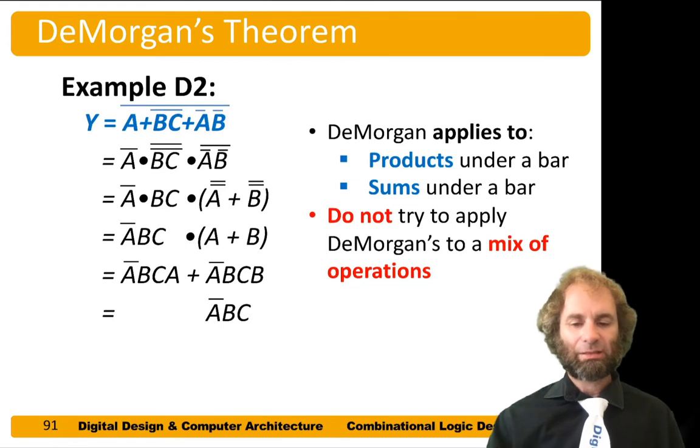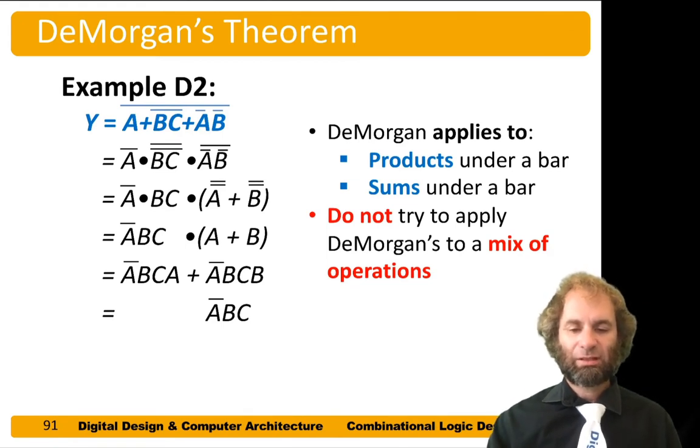Here's another example, slightly more complicated. Here I have a NOR of a bunch of expressions. So applying De Morgan's law, it becomes the AND of their complements. I get A bar and BC bar bar and A bar B bar bar.